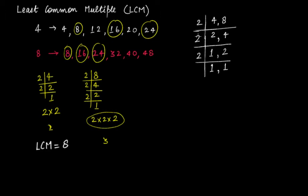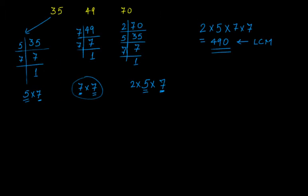Your least common multiple will be the product of these prime numbers: LCM = 2 × 2 × 2 = 8. You can see that this is the same result we got using the separate prime factorization method in Part 1.